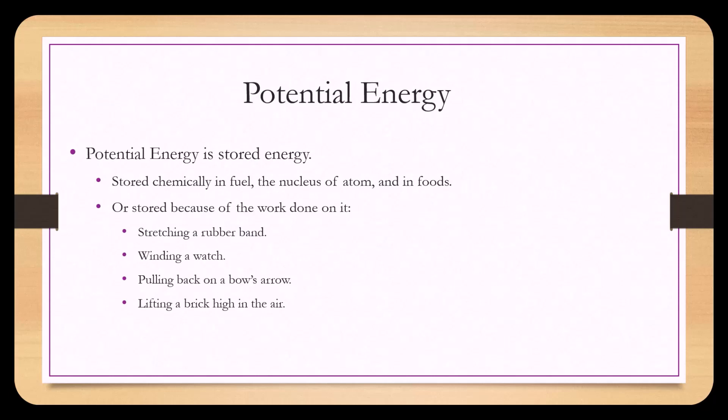Potential energy is stored energy — stored chemically in fuel, in the nucleus of an atom, and in foods, or because of the work done on it. Examples of this would be stretching a rubber band, winding a watch, pulling back a bow's arrow, or lifting a brick high in the air.